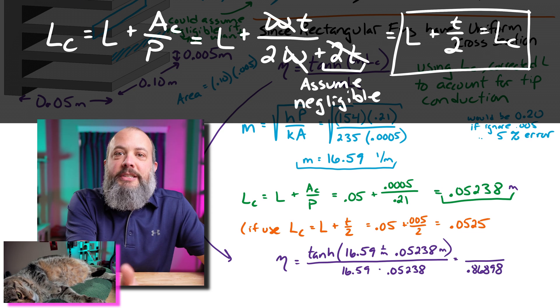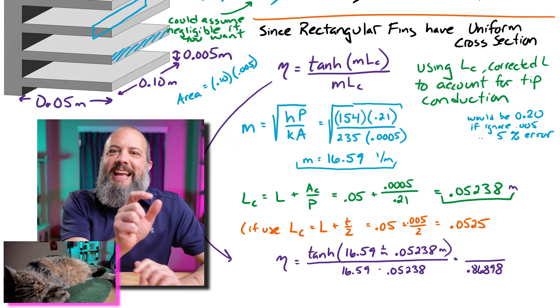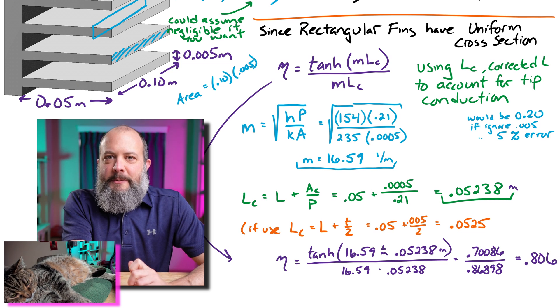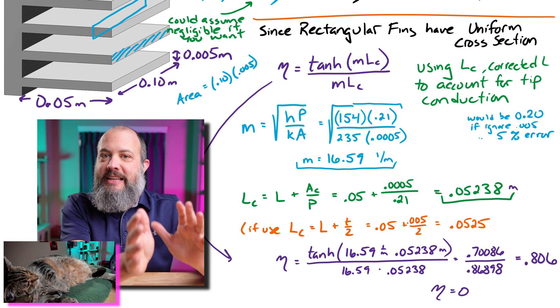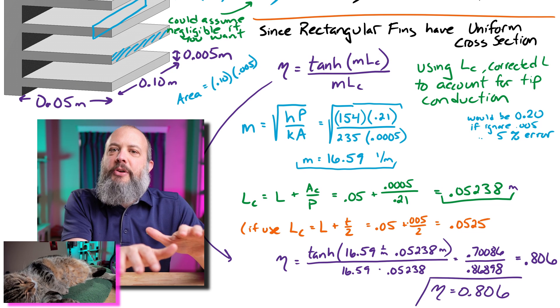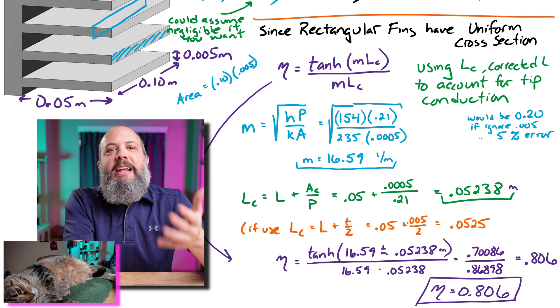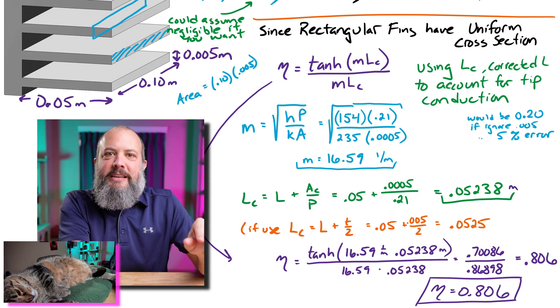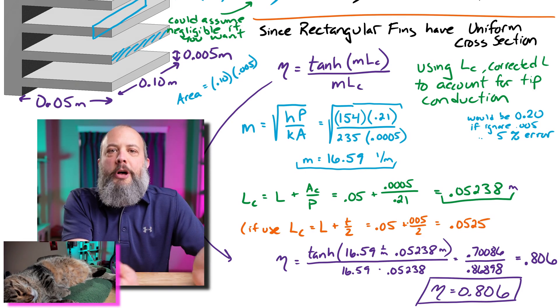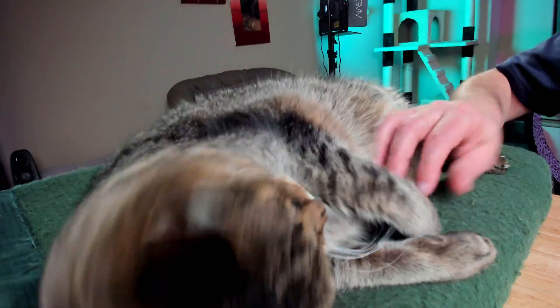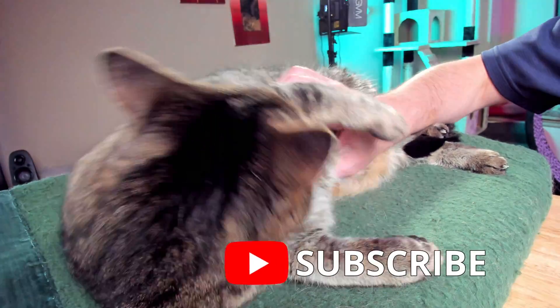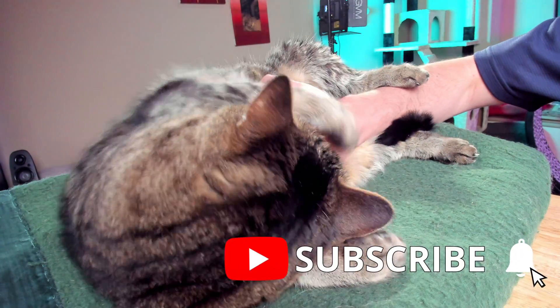So plug in all my numbers and I get a fin efficiency of 0.806. So this is like 80% efficient. The actual heat transfer from this fin is 80% as much as if the fin were perfectly conductive and the entire fin were at the wall temperature. And so 80% efficient is actually probably pretty good. So if you think your TA Serenity is doing a great job helping us out, you can reward her by hitting the belly rubs.